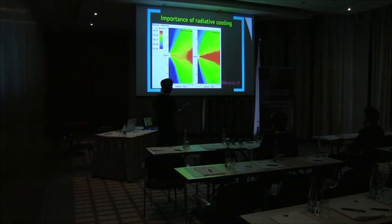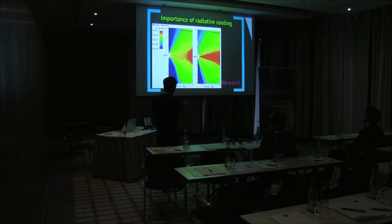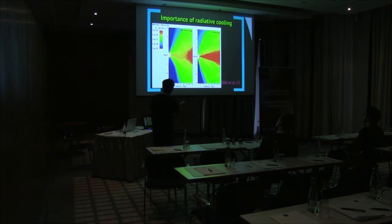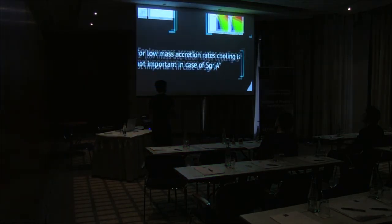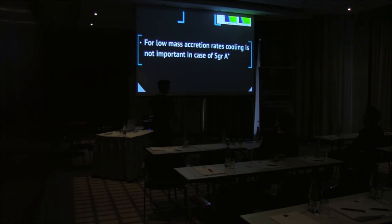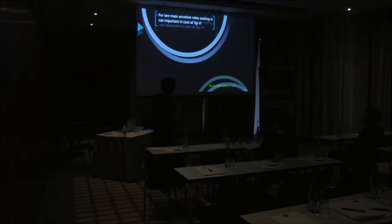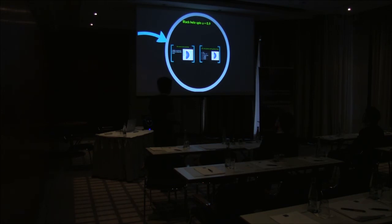The simulation from that paper shows: without cooling, more matter is accreted and there is a high-density region; with cooling, the density is lower. This is shown in logarithmic plots. The conclusion of the paper was that cooling is not needed for Sagittarius A*, which is why I did not include cooling in my results.